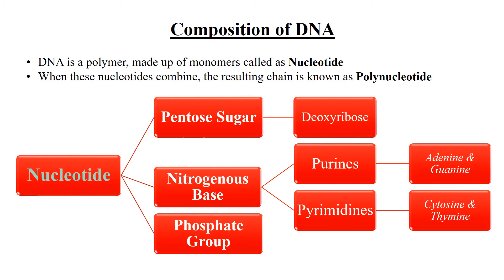The nitrogenous base can be divided into two categories: purines and pyrimidines. Purines are larger than pyrimidines because purines have a two-ring structure and pyrimidines have only one ring structure. Examples of purines include adenine and guanine, and examples of pyrimidines include cytosine and thymine.